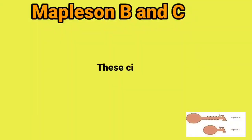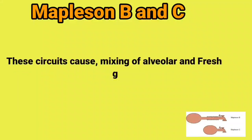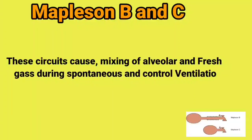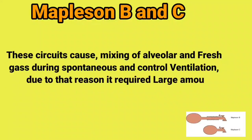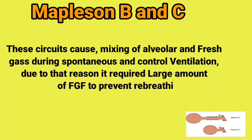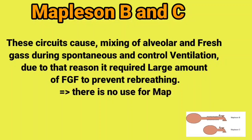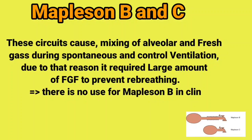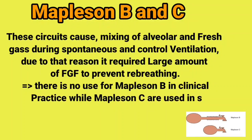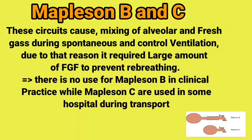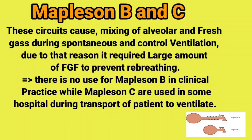Mapleson B and C circuits. These circuits cause mixing of alveolar and fresh gas during both spontaneous and controlled ventilation. Due to that reason, they require a large amount of fresh gas flow to prevent rebreathing. There is no use for Mapleson B in clinical practice, while Mapleson C is used in some hospitals during transport of patients to provide ventilation.